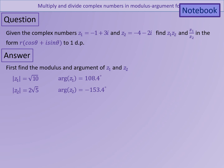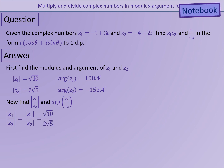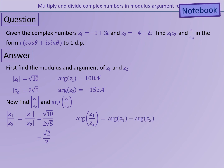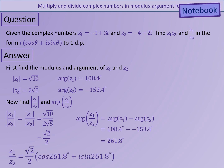So Z1·Z2 can be written as 10 root 2 bracket cos(−45) plus i sin(−45). Now for the quotient: the modulus of Z1 over Z2 is the modulus of Z1 divided by the modulus of Z2, which works out at root 2 over 2. The argument of Z1 over Z2 is the argument of Z1 minus the argument of Z2. Because we've got minus a negative, it ends up being plus, giving an argument of 261.8. So Z1 over Z2 can be written as root 2 over 2 bracket cos(261.8) plus i sin(261.8).